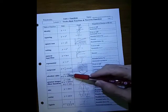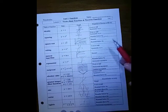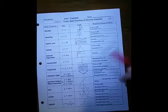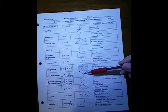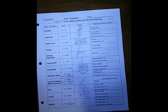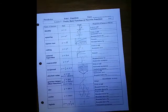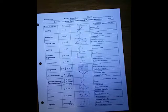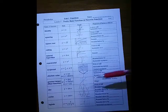The absolute value function, y equals the absolute value of x, has a slope of minus 1 on the left side and a slope of 1 on the right side. Is that an even or an odd function? Is it symmetric with respect to the y-axis or the origin? What's it bounded below by?